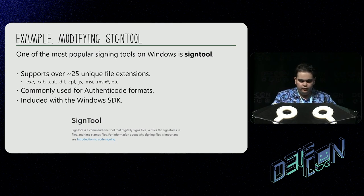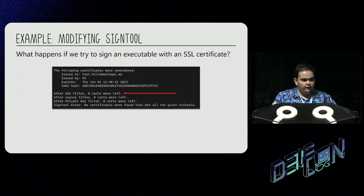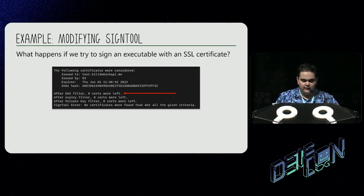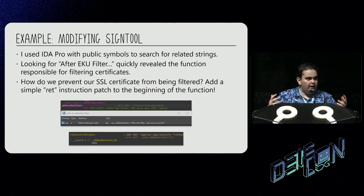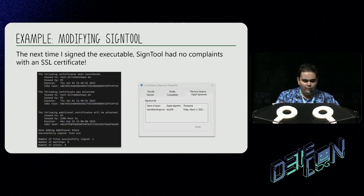To start, I looked at Microsoft's SignTool, which lets you sign over 25 unique file extensions. This utility is most often used for Authenticode and is included with the Windows SDK. I performed a sanity check and tried to sign an executable with an SSL certificate. SignTool, by default, does validate the EKUs of your code signing certificate — we need to get around this. Using IDA Pro, I was able to quickly find the function responsible for the check by looking for the EKU filter error string. The function was conveniently named 'filter certificates.' I patched the function to immediately return and avoid filtering entirely. The next time I tried signing my executable, it worked without a problem.